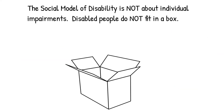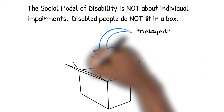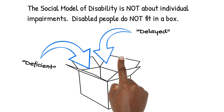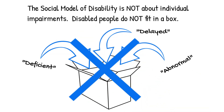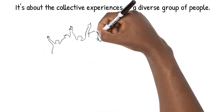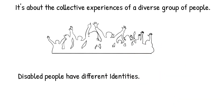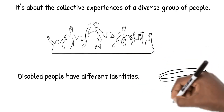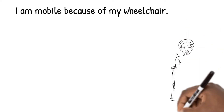An image of a box with arrows and the words 'deficient,' 'delayed,' and 'abnormal' pointing inside appears — and the box is crossed out. The social model of disability is not about individual impairments. Disabled people do not fit in a box. Images of a crowd and an identification lanyard appear. It's about the collective experiences of a diverse group of people. Disabled people have different identities.